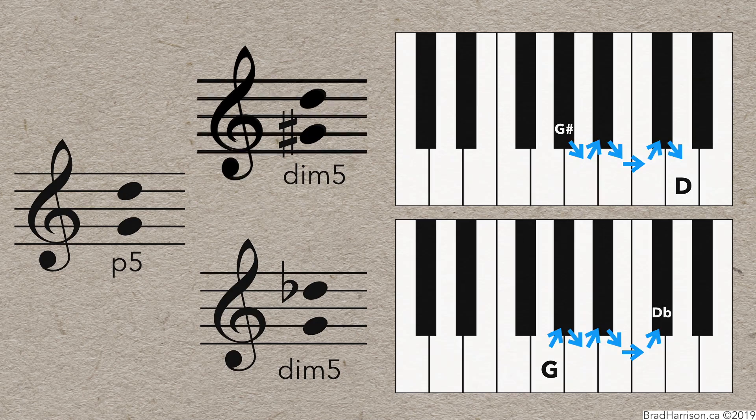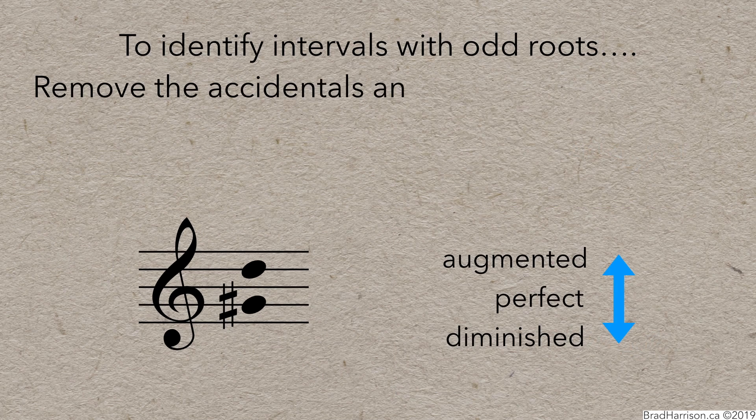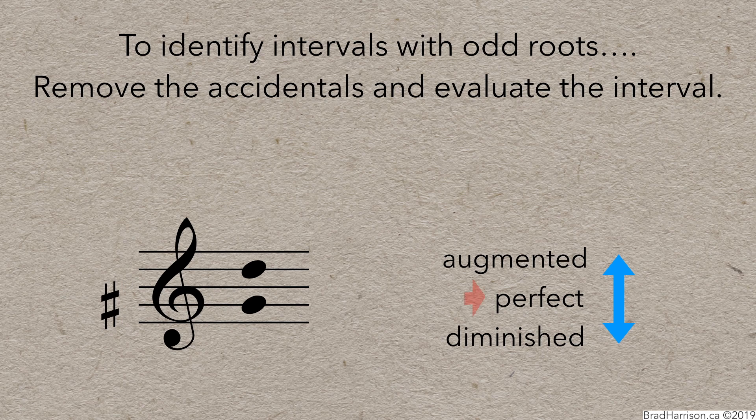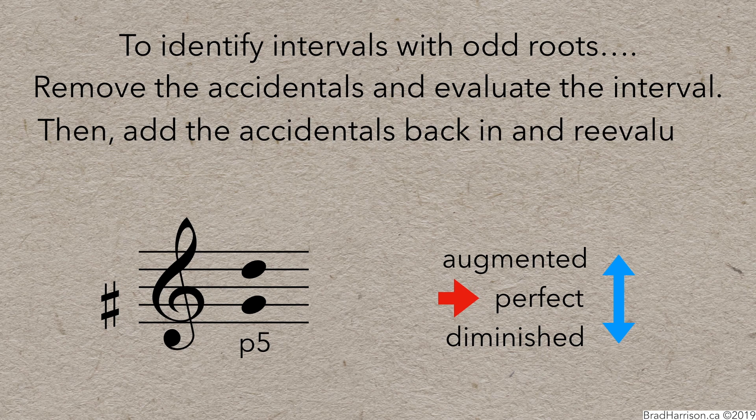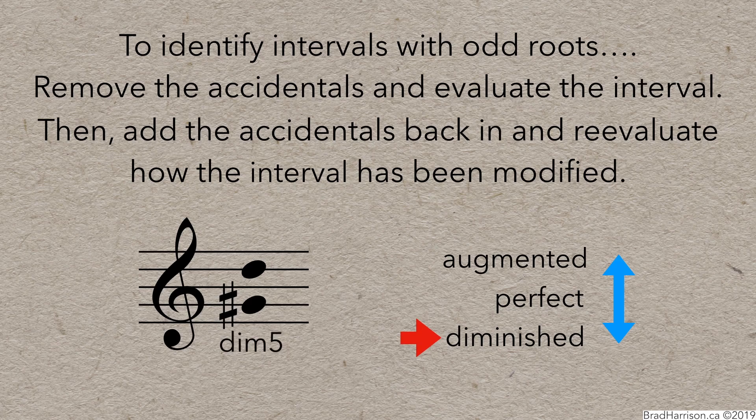The basic process is this. To identify intervals with odd roots, remove the accidentals and evaluate the interval. Then add the accidentals back in and re-evaluate how the interval has been modified.